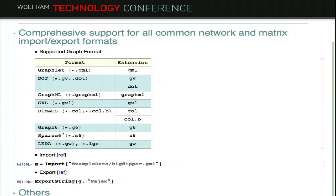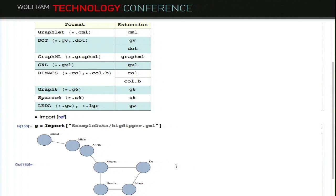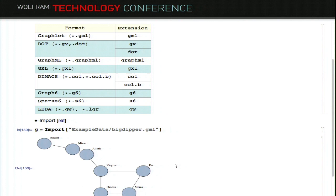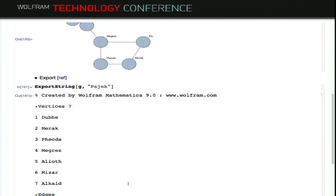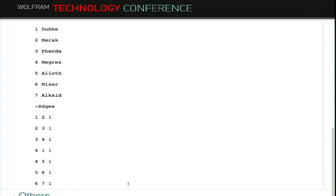For example, this is GML format. This is one of the examples in Mathematica — you just import it and it's automatically converted to a graph. You can also export this graph to whatever format you want from that table. Here I'll show what you see on the outside using the export string, exporting it using the GraphML format, showing the vertices and edges.